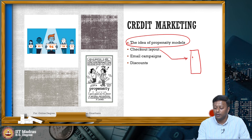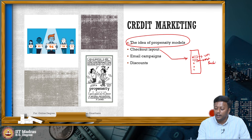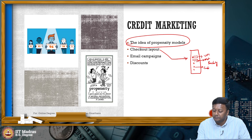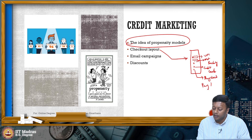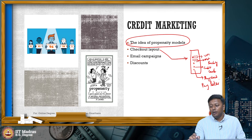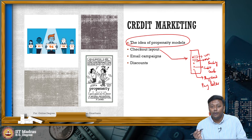You have a checkout and you have various options — this could be your UPI, this could be net banking, credit card, and then buy now, pay later, something like that. For buy now, pay later, we have to do a credit bureau check, and if I know that you are really interested in that product, I will make that investment. Let us consider this as scenario 1.